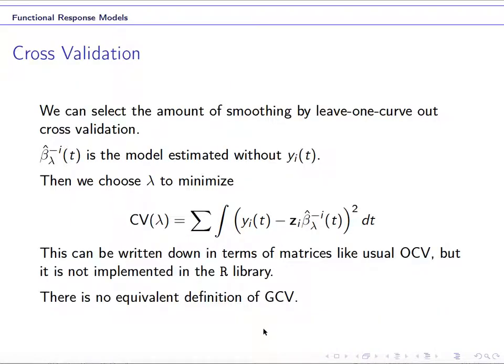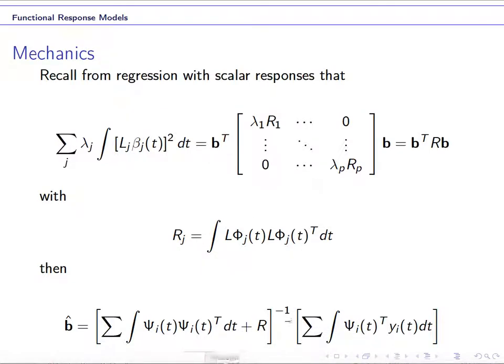So here, this lambda, lambda 1 to lambda p, represent the smoothing parameter. And it controls how smooth you want the beta t should be.